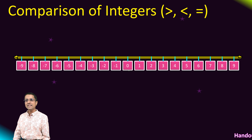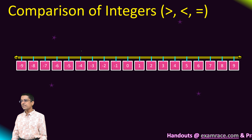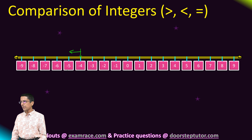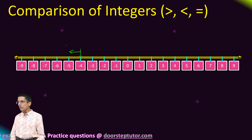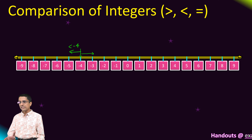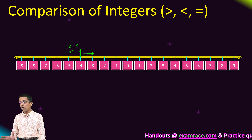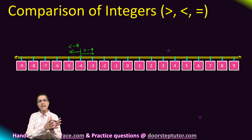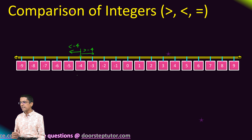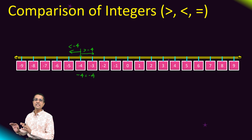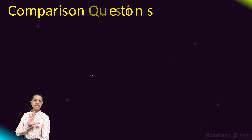Let's consider a negative number — minus 4. All numbers to the left of minus 4, such as minus 5, minus 6 until minus infinity, are less than minus 4. All numbers to the right — minus 3, minus 2, 0, 1, 2, 3 till positive infinity — are greater than minus 4. Numbers to the right are greater; numbers to the left are less. Very simple if you understand the number line.